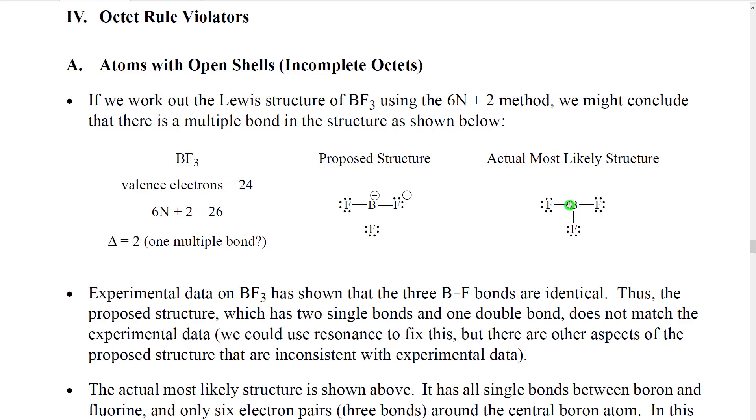Later on, we're also going to talk about Lewis acids. And we're going to see that BF3 is a classic Lewis acid. And in order to be a Lewis acid, you have to have an incomplete octet. So we generally believe this is the better representation right here. We leave boron with an incomplete octet. And when we calculate formal charges, none of these atoms have a formal charge.